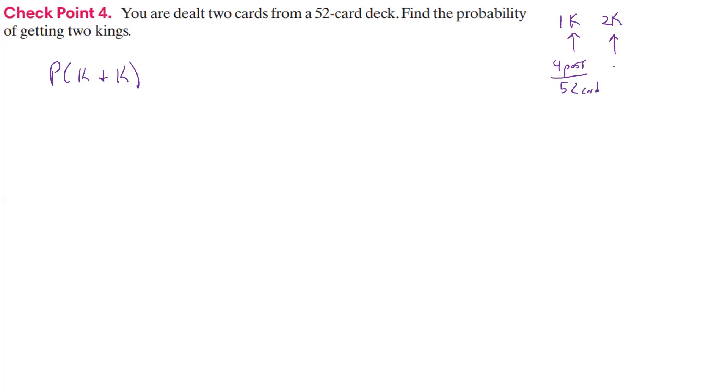Now, if you've taken that one out, when you're getting ready to be dealt that second king, how many kings are left? Well, there's only three possible kings at that point because you've already taken one. So there's only three possibles here, and there's not 52 cards left because you've taken one out, so there's only 51 cards left.